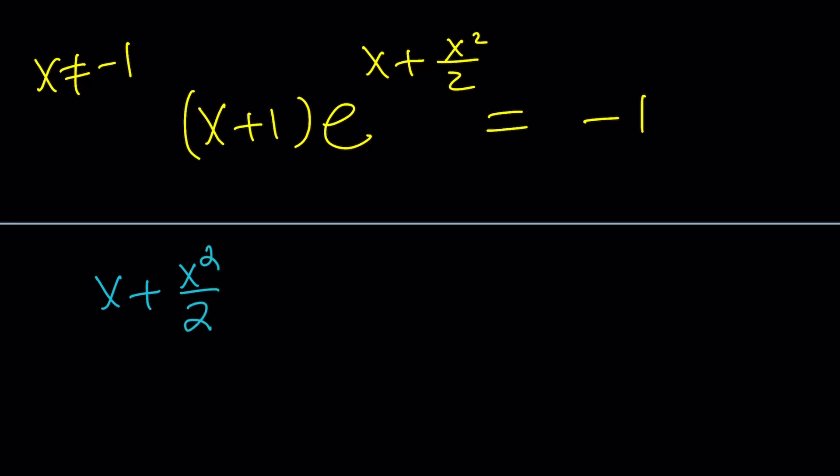This is something in disguise. Notice that we can make a common denominator and write it as 2x plus x squared all over 2. And then switching these around is going to give us something that should look more familiar.